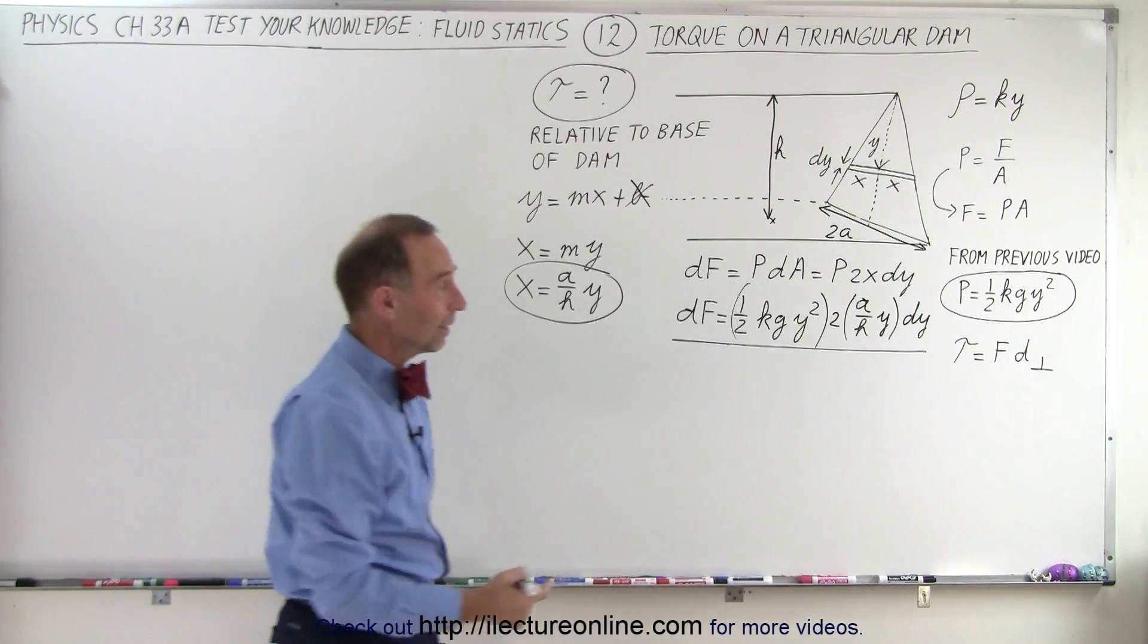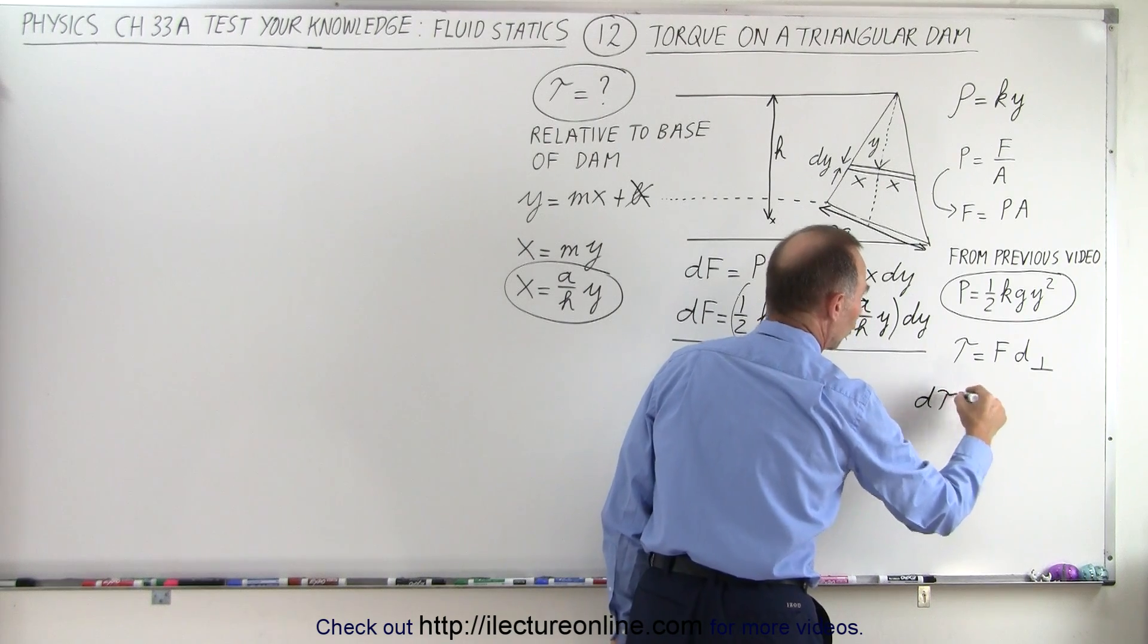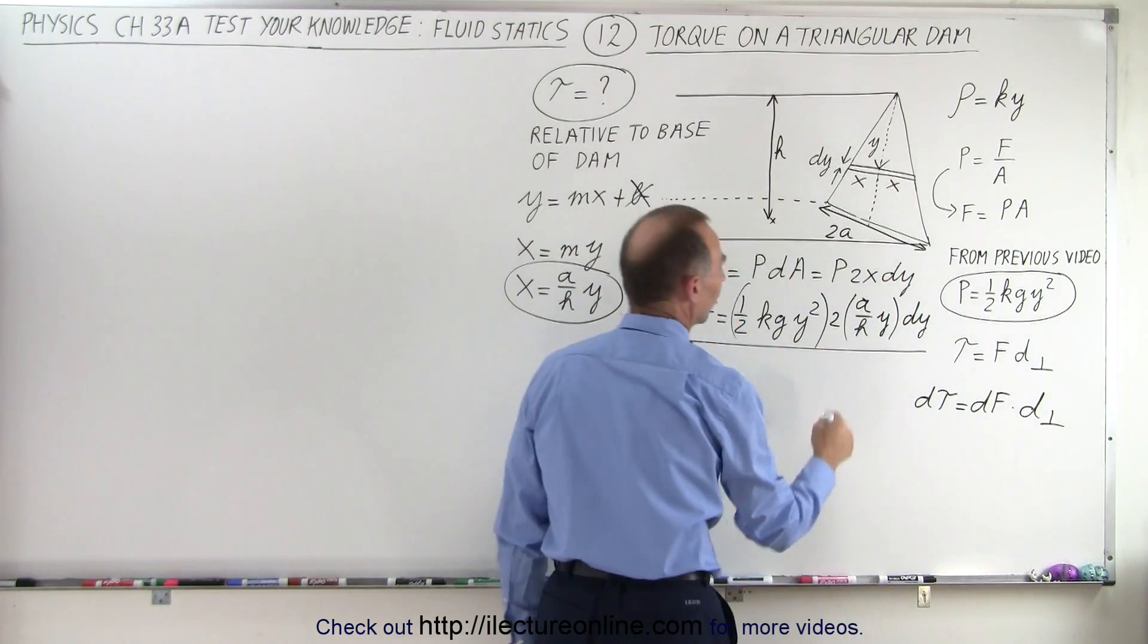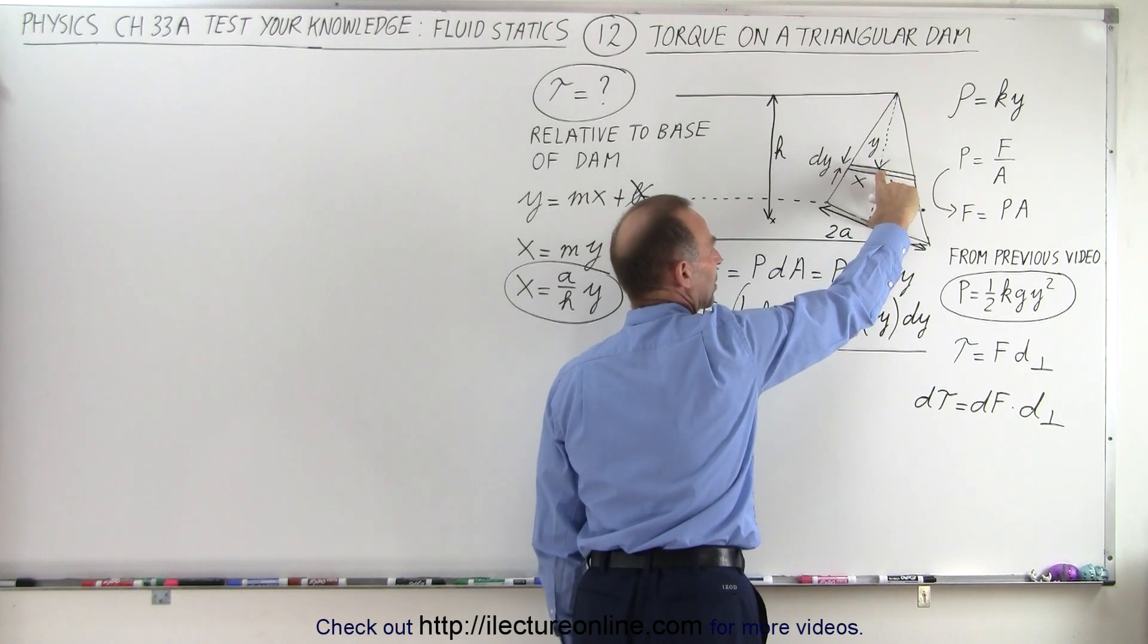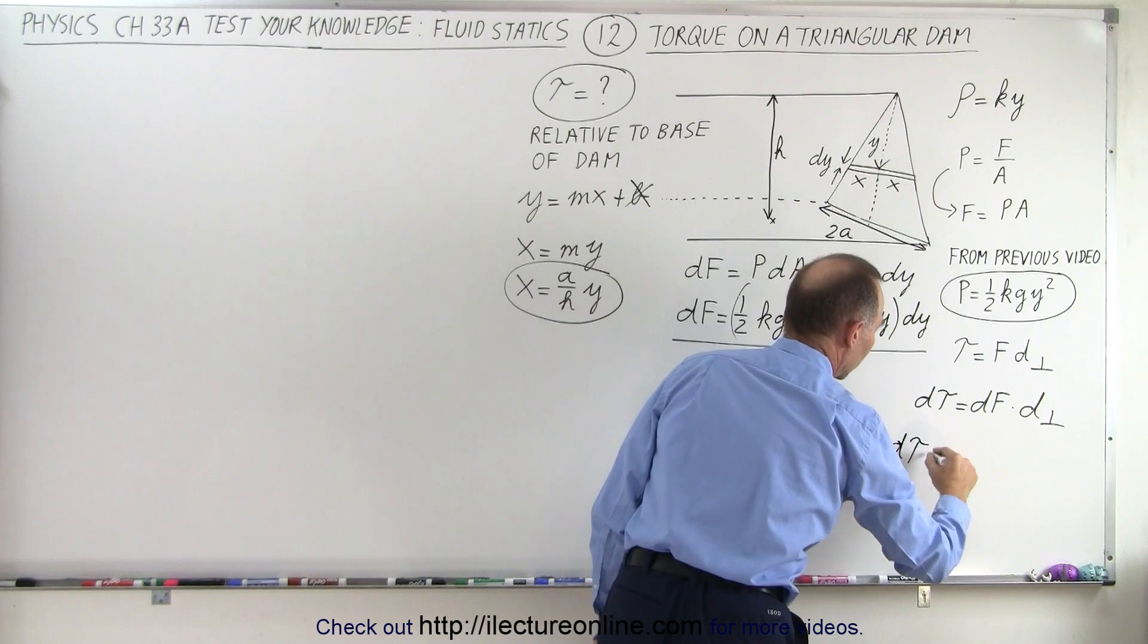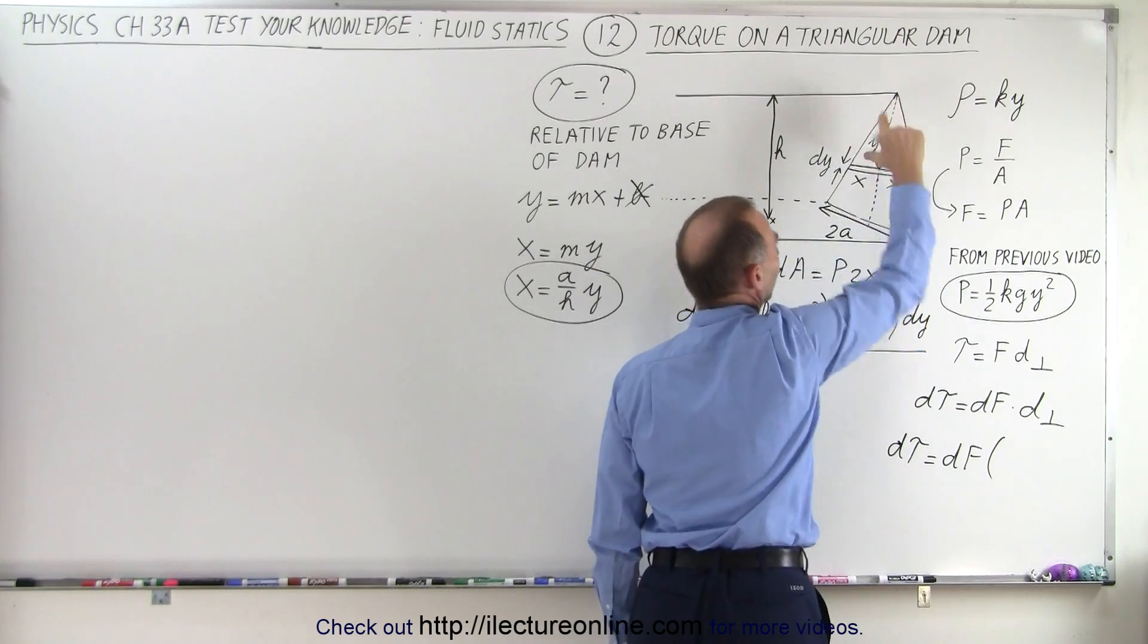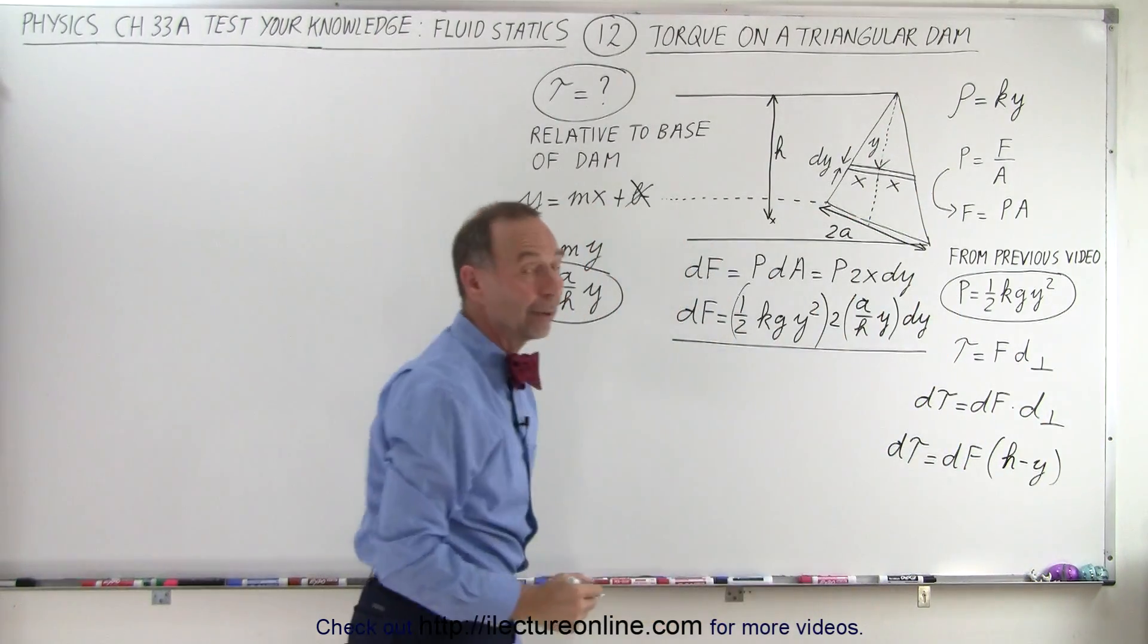Why do we need that? Because to find the torque, I'm going to find a small torque element, which is equal to a small amount of force times the perpendicular distance from the base of the dam to that strip, which is this distance right here, and that distance needs to be defined. So d torque is equal to dF times that distance, which will be the total distance h minus y.